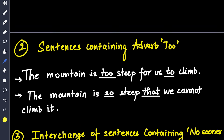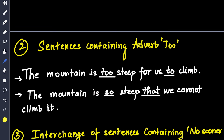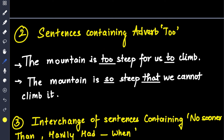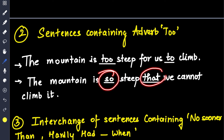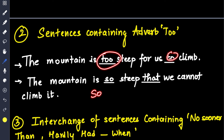Moving on to sentences containing 'too': 'The mountain is too steep for us to climb.' Using 'too' and 'to' — you convert it to: 'The mountain is so steep that we cannot climb it.' They may ask you to change it from 'too...to' to 'so that'.